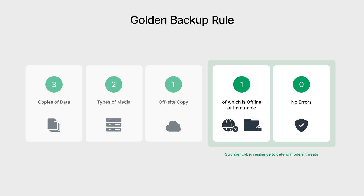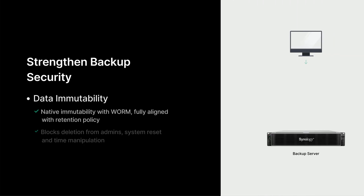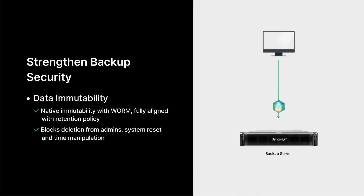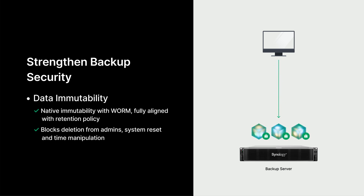Let's start with the first '1' in the 1-0 rule. Active Protect provides built-in immutable protection using WORM technology. Once data is written, it is programmatically locked and cannot be altered or deleted, even by an administrator, a ransomware attack, or even a system reset.